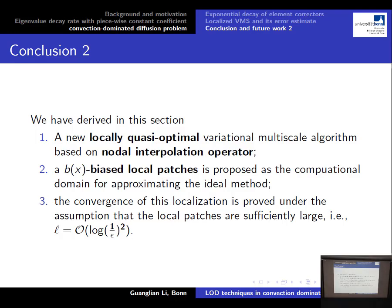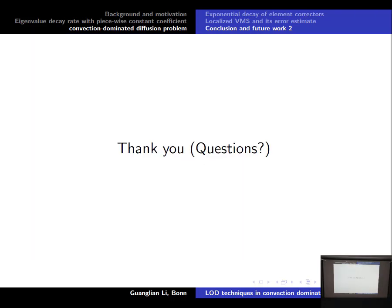In this last part, we derived a new locally quasi-optimal variational multiscale algorithm based on the nodal interpolation operator. One feature of this algorithm is the definition of the element patches, which depends on the velocity. This type of localization can approximate the IDEA method exponentially. The convergence of this localization is proved under the assumption that the local patches are sufficiently large — of order log(1/epsilon^2). Thanks for your attention.